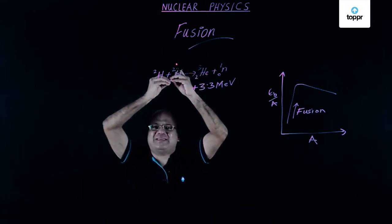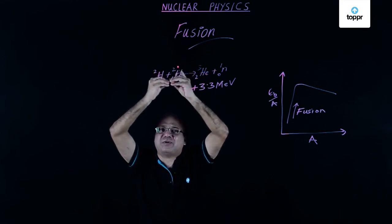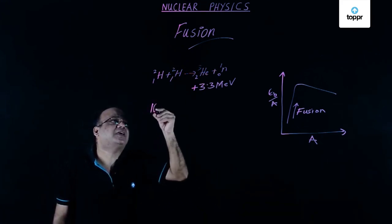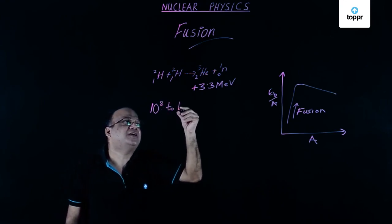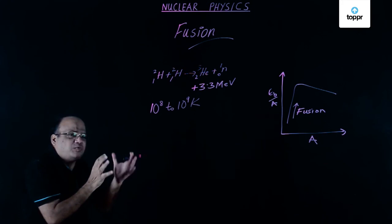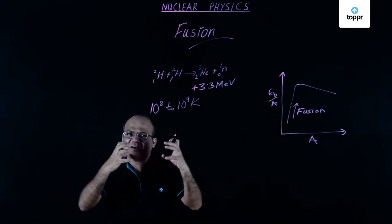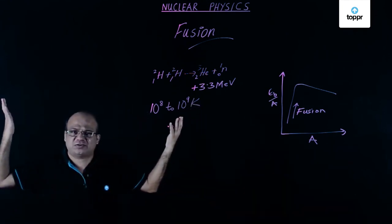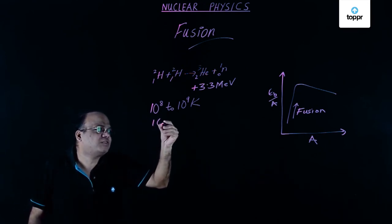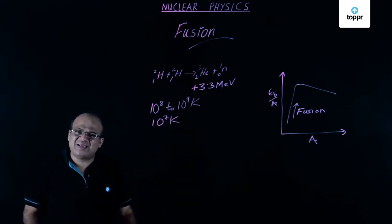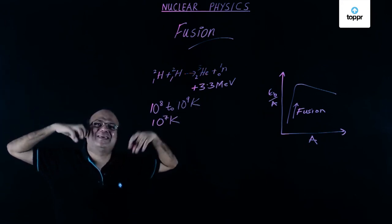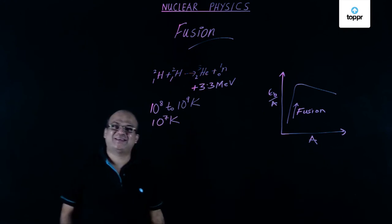These two deuterium nuclei will not combine easily because there is an electrostatic force of repulsion between them. To make them combine we need a very high temperature — 10 to the power 8 to 10 to the power 9 Kelvin. On Earth we get this temperature by nuclear fission: start a nuclear fission reaction, get this temperature, then fusion will start. In the sun the core temperature is around 10 to the power 7 Kelvin, which is a bit lower, but there are so many nuclei present that they collide and the reaction takes place.